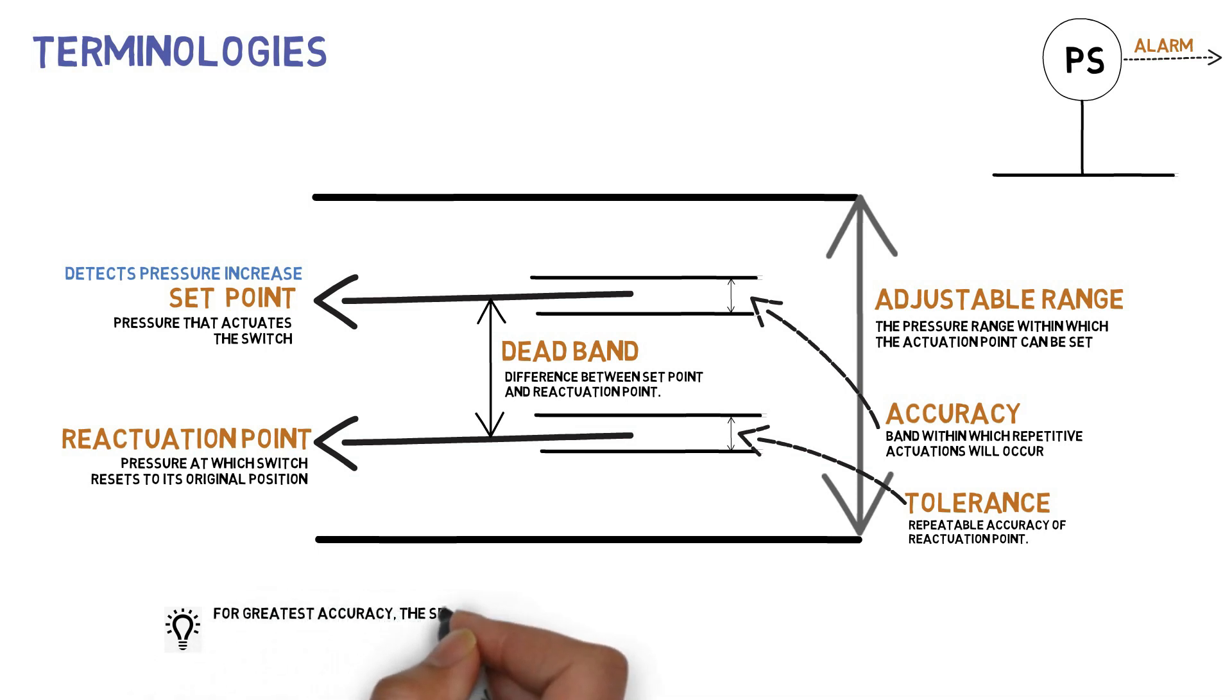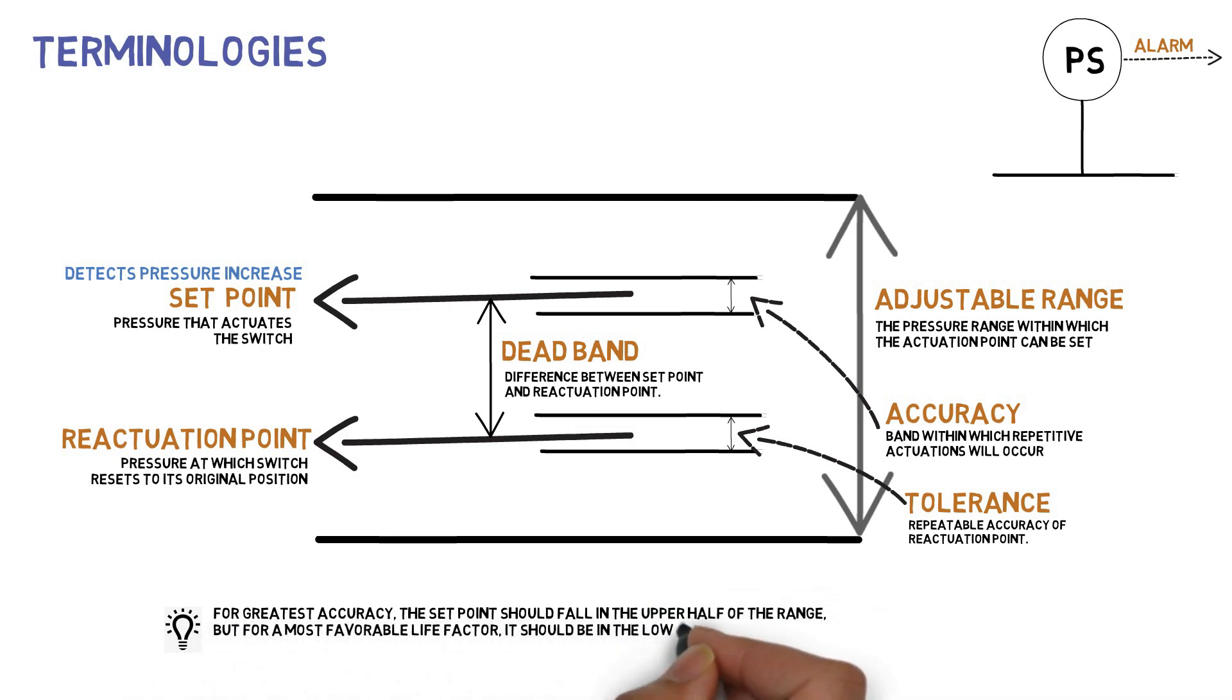For greatest accuracy, the set point should fall in the upper half of the range, but for most favorable life factor, it should be in the lower half. The usually acceptable compromise is to locate the set point in the middle third of the range.